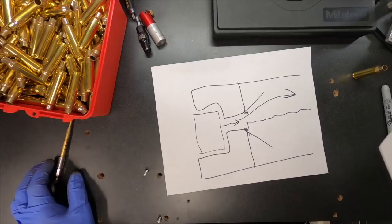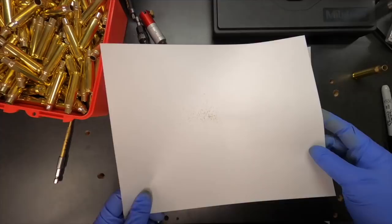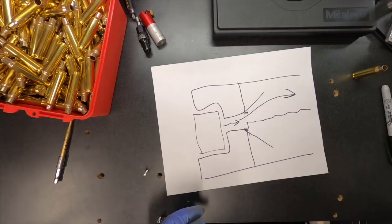And this gives you an idea of kind of what comes out of there. It's just, you know, occasionally a little chunk here or there. Sometimes it's really fine, sometimes it's coarser.